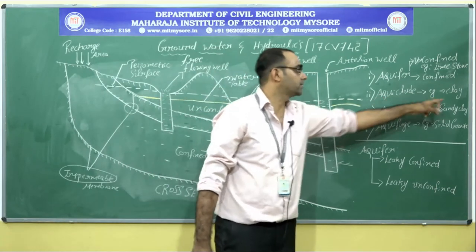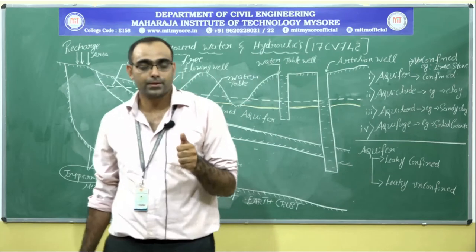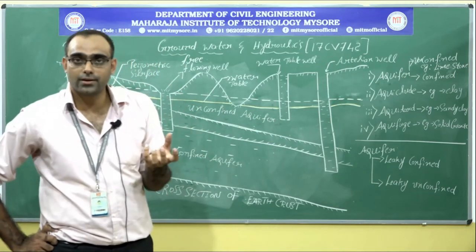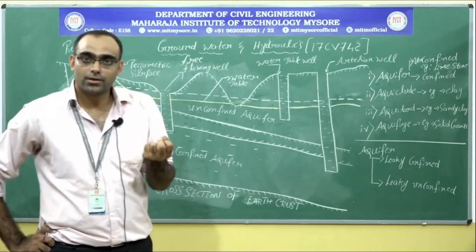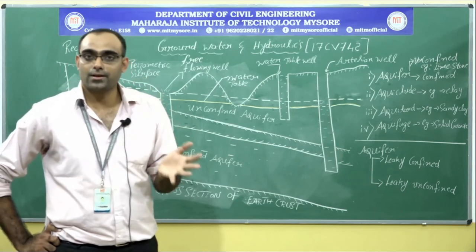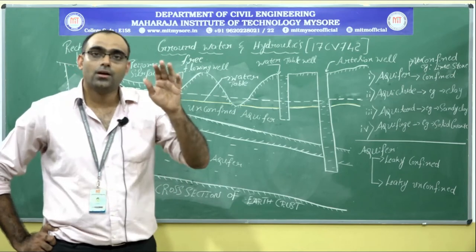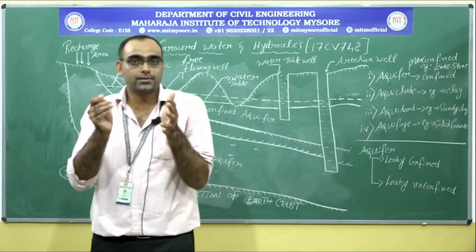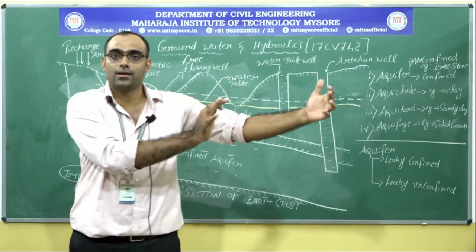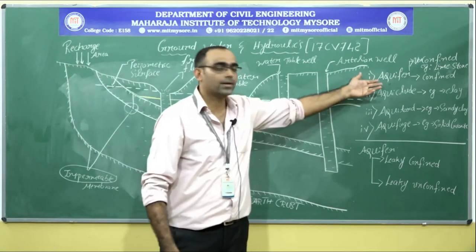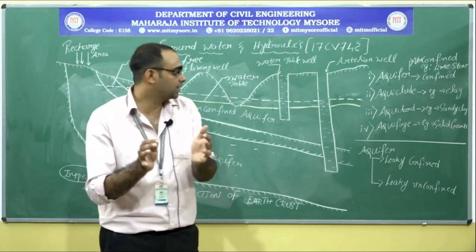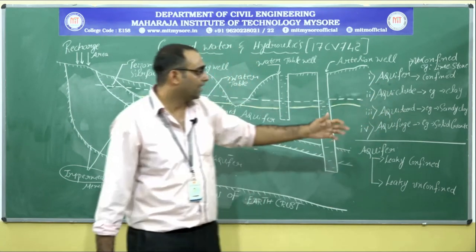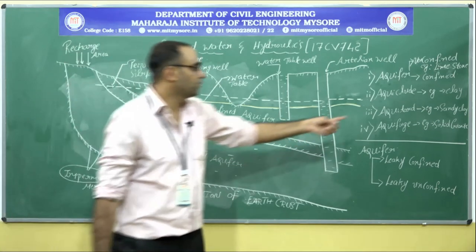The next geological formation is the aquitard. Aquitard is a geological formation which has water stored in it due to good porosity, but since it is very poor in permeability, it does not yield water to any wells dug into it. However, one important point: the aquitard passes its stored water to another geological formation — that is, an aquifer. That special property is what distinguishes aquitard, and an example is sandy clay.